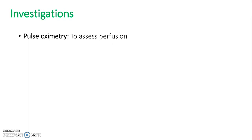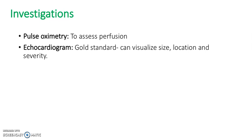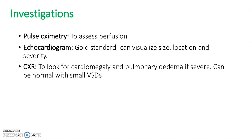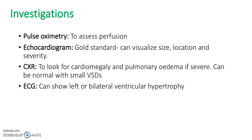What investigations would we do to diagnose a VSD? Pulse oximetry is important to assess perfusion. The echocardiogram is the gold standard diagnostic test, as it can visualise the size, location, and severity of the VSD. A chest x-ray can look for cardiomegaly and pulmonary oedema if severe, although it can be normal with small VSDs. An ECG can show left or bilateral ventricular hypertrophy, but can also be normal.